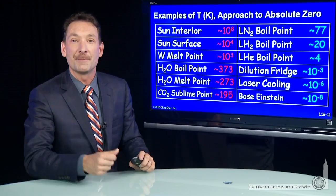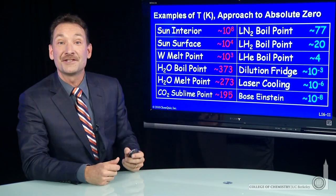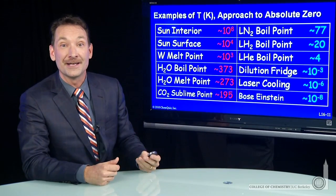Let's look at a broad range of temperatures on the absolute scale. Here I've listed several. The interior of the sun, for instance, 10 to the eighth Kelvin, a very high temperature.